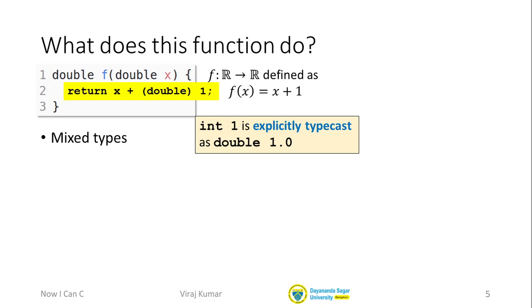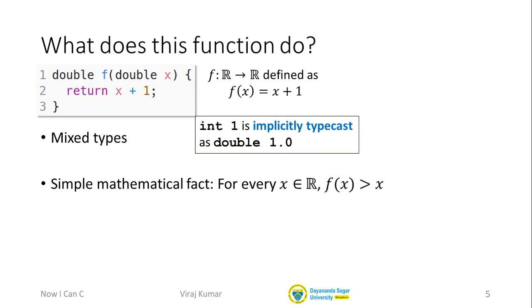Please keep in mind that whenever you have a mixed expression like x plus one, here, with x being double and one being int, then there is going to be some implicit typecasting. And C tries to guess what you mean. And if that is correct, great. But sometimes that's not correct. And we will see some examples of this because this is a source of error.